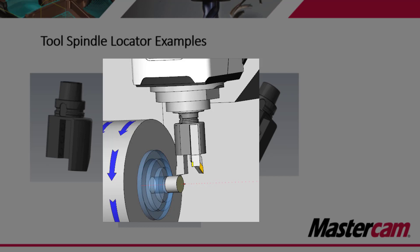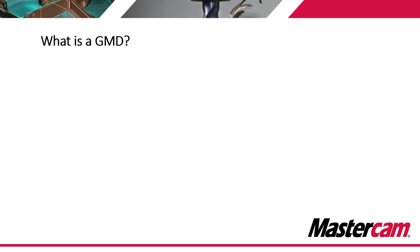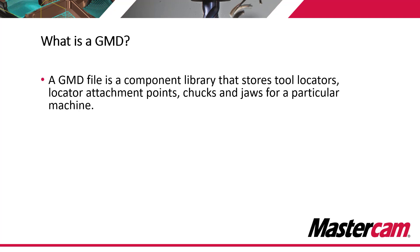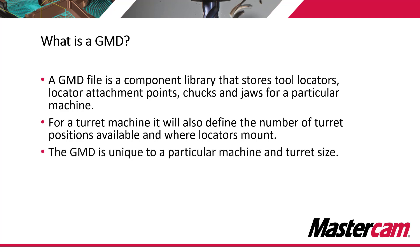The B axis spindle has the ability to index to each of those locations. A GMD is a component library that stores our tool locators, the locator attachment points, the chucks and the jaws for a particular machine. On a turret machine, it will also define the number of turret positions that are available and where the locators mount. The GMD is unique to a particular machine with a particular turret size. We can copy tool locators between two GMDs, but the GMD itself is specific to the turret size on that machine and how many positions it has.